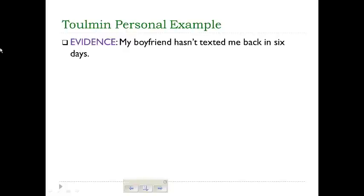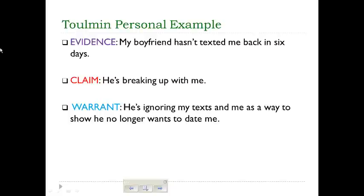What are you going to conclude from this? You can claim lots of different things. Let's say we're going to be paranoid and claim: he's breaking up with me. Now, a lot of people might stop there, but we can't forget the warrant. We have to say, how is that a sign he's breaking up with me? Your warrant would be: he's ignoring my texts as a way to show he no longer wants to date me. But you could also come to a different claim — perhaps your boyfriend has been in Japan for the last six days and can't afford to text, or maybe his parents grounded him and he doesn't have his phone. All these would lead to different warrants.